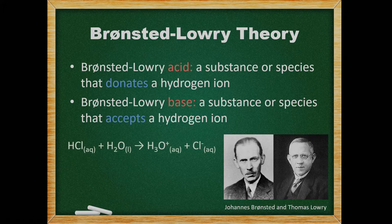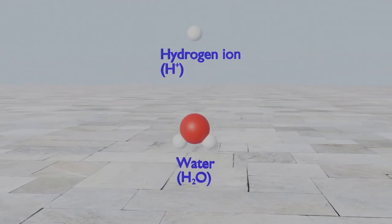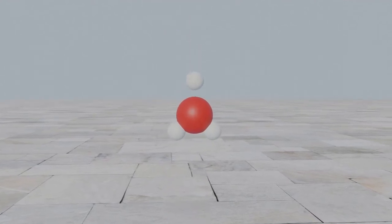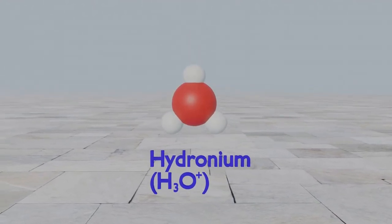In the example below, the hydrochloric acid is donating a hydrogen ion to the water molecule. Therefore, the hydrochloric acid is acting as a Bronsted-Lowry acid. Since the water accepts the hydrogen ion, it is acting as a Bronsted-Lowry base. In this reaction, the hydronium ion is a product. Hydronium is just a water molecule with an extra hydrogen ion.